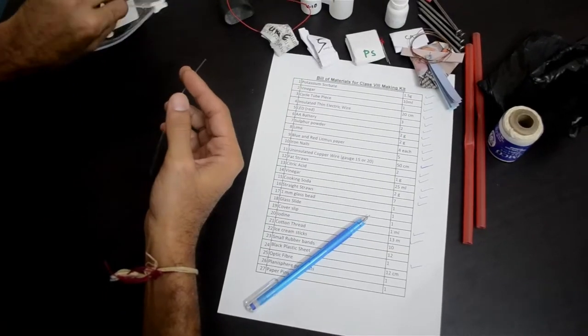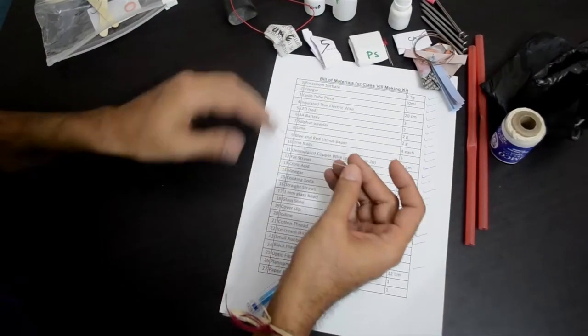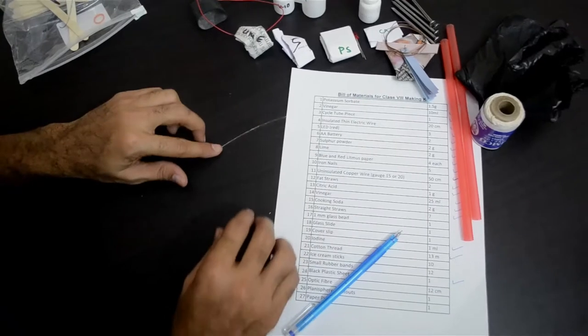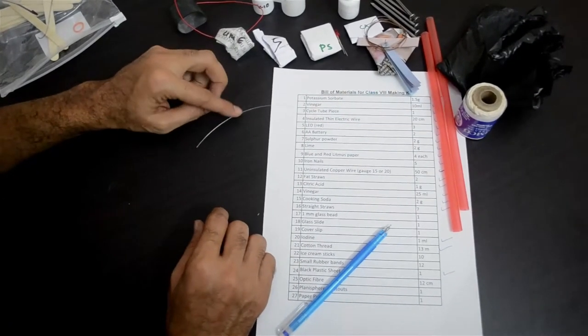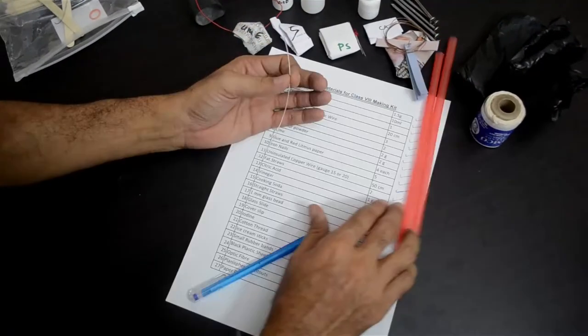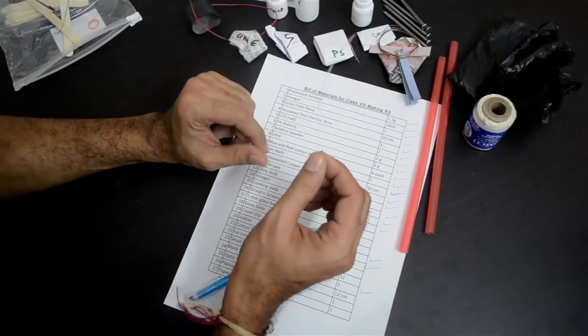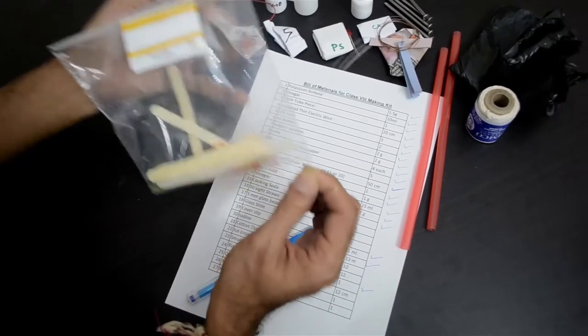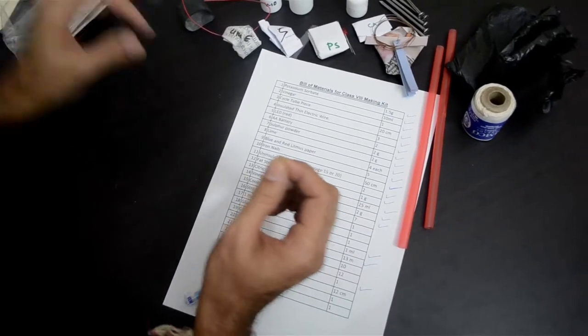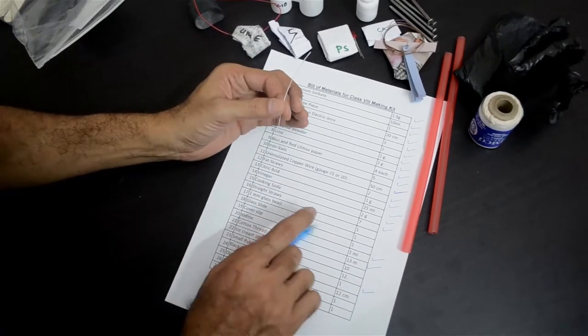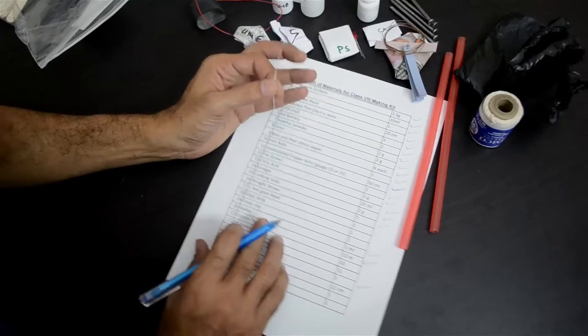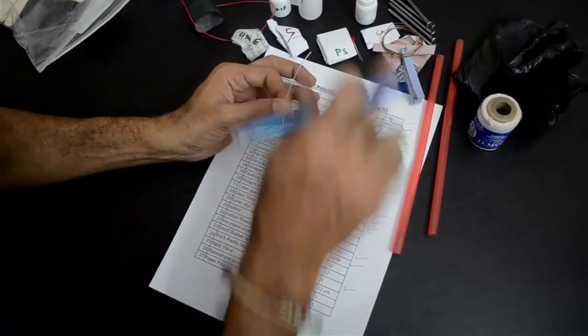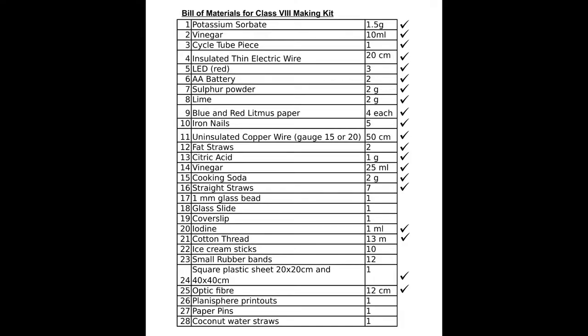Thin wire like this. It's very easy to confuse this with a nylon thread. Please observe carefully. This being almost same color as the kit's color, it's also very easy to miss this. This is an optical fiber piece. You will need this for doing the activity with optical fiber, total internal reflection. So that is item number 25 in our list, around 12 cm long optical fiber. Please identify this and keep it safely.